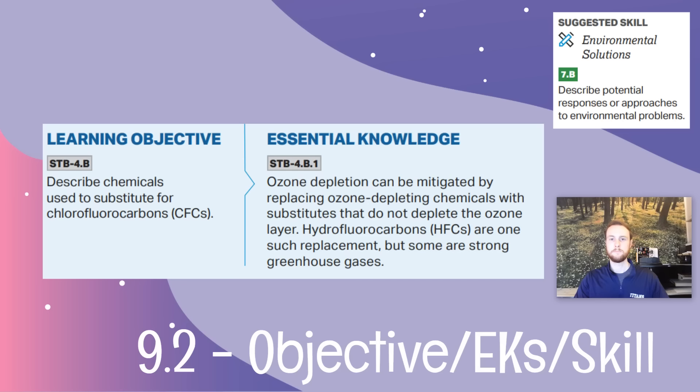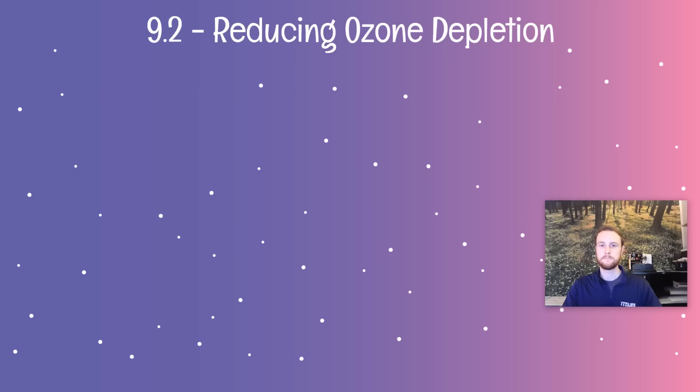Because these topics are so closely related and 9.2 is such a brief topic, we're going to combine two topics in one video. We're now going to look at ways to reduce specifically anthropogenic driven ozone depletion. We're going to look at substitutes for these CFCs. The good news is that we have quite a few of them and we're well on the way to replacing them. Since CFCs released by refrigerants, aerosol canisters, and other products are the main anthropogenic contributors to stratospheric ozone depletion, the main way to solve the issue is to limit their release.